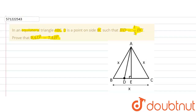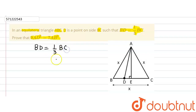So let's solve this question. We are given that BD is equal to one-third of BC. We have assumed all the sides to be X because it is an equilateral triangle, so all the sides are equal.